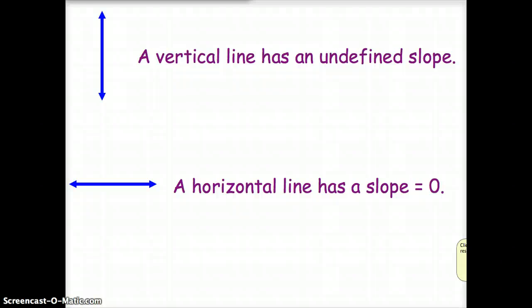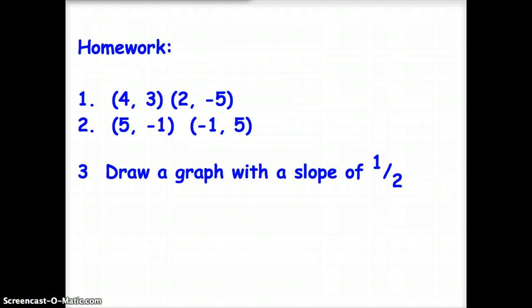In summary, a vertical line has an undefined slope. All horizontal lines have a slope of 0. For your homework assignment tonight, find the slope for the first two problems. For the third problem, draw a graph with a line that has a slope of 1 half. See you tomorrow.